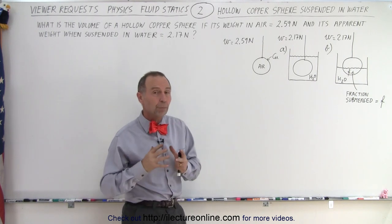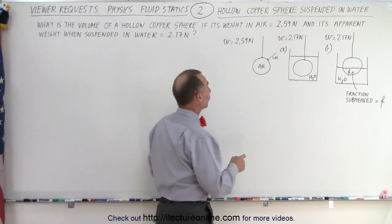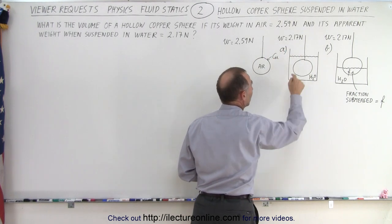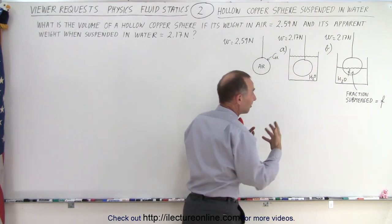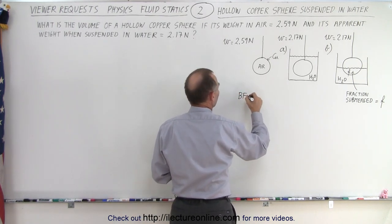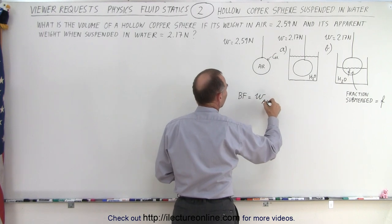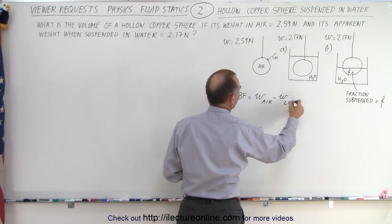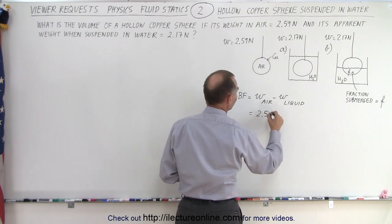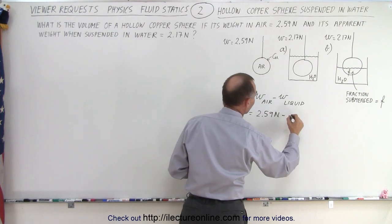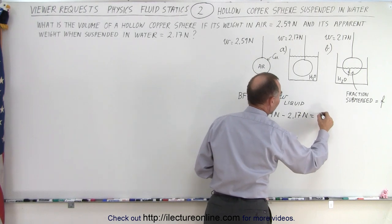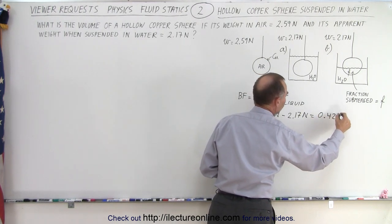First, we need to find the buoyancy force. The buoyancy force is equal to the weight when suspended in air minus the weight when suspended in the liquid — it doesn't matter which case, it's still the buoyancy force. So the buoyancy force equals 2.59 newtons minus 2.17 newtons, and the difference is 0.42 newtons.